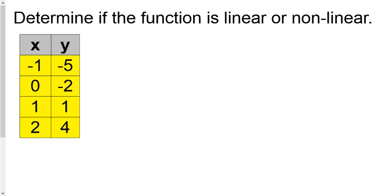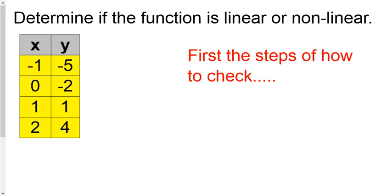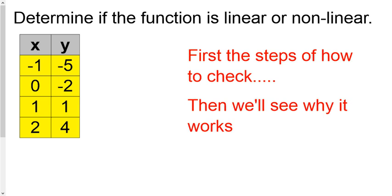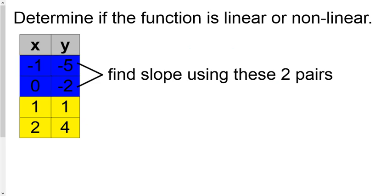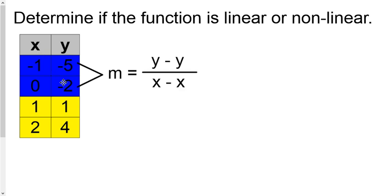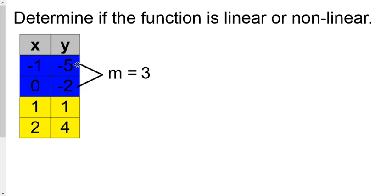Is this function linear or nonlinear? First we'll show you how you can get the answer without graphing, and then we'll see why we can trust this method. You go through the first two rows of the table and use the slope formula to get the slope — plug in your y's and x's, find out what the slope is. You can do it all with a calculator, which makes it really simple. The slope between these two rows is three.